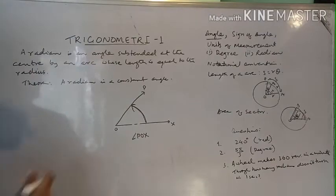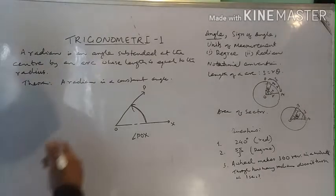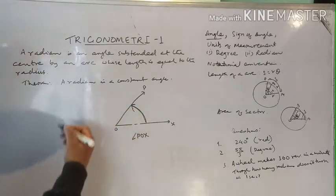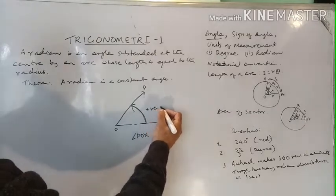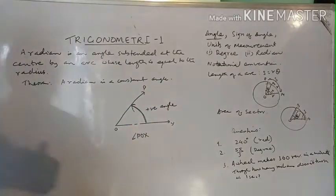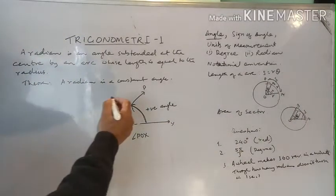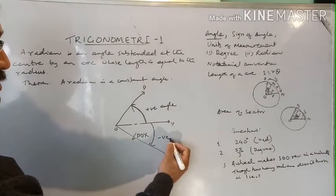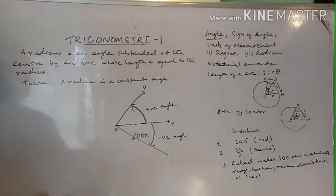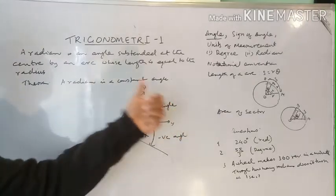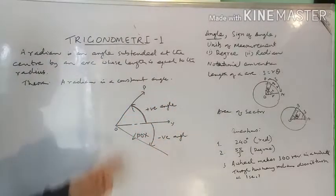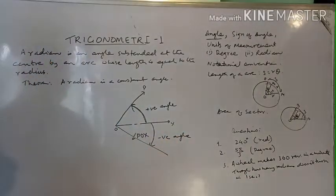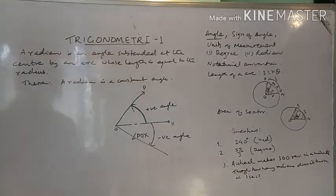When this line revolves in anti-clockwise direction, the angle is taken as positive. If it revolves in clockwise direction, the angle is taken as negative. This is the sign convention for angles. Whenever the line revolves in anti-clockwise direction, the sign of the angle is positive; in clockwise direction, it is negative.